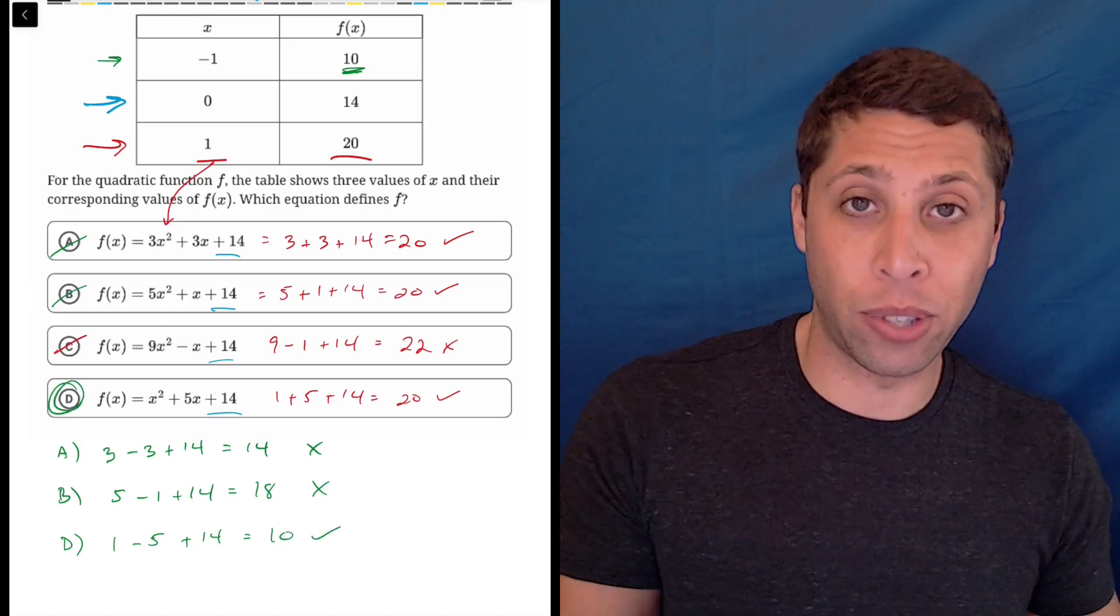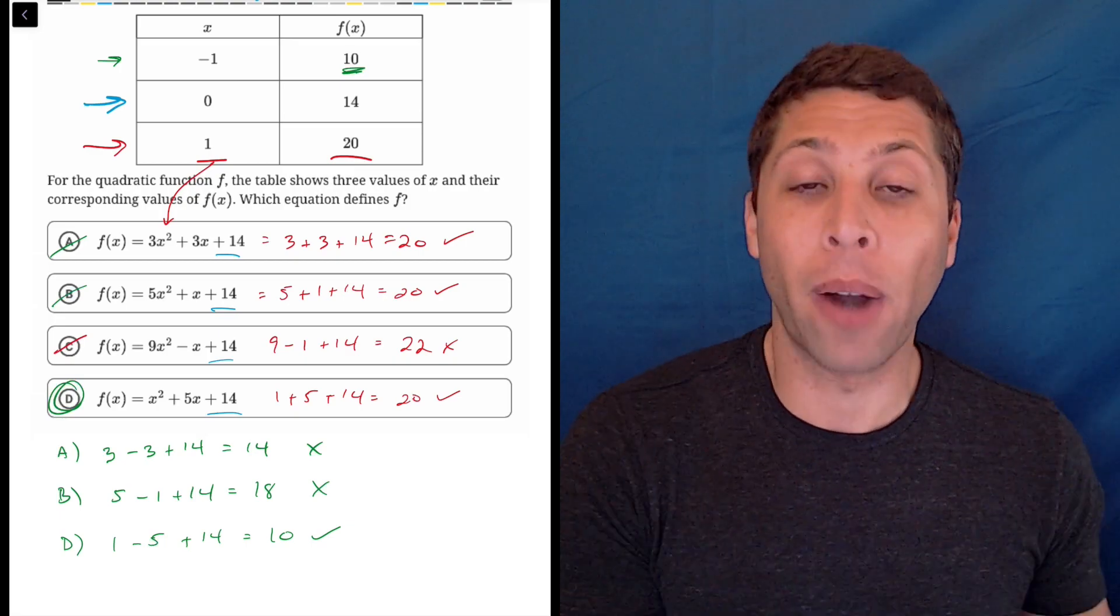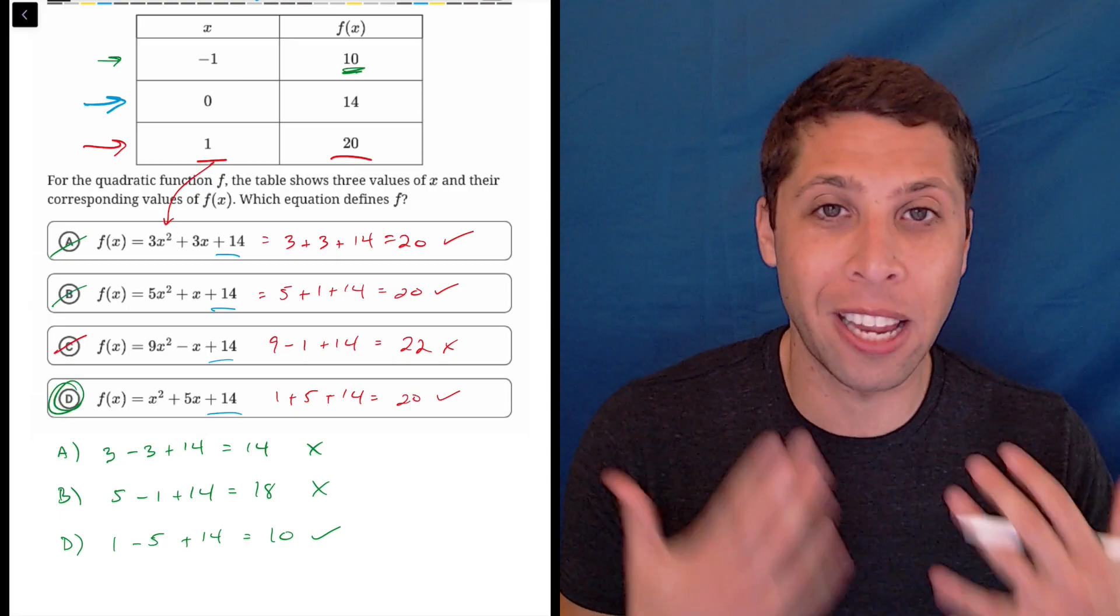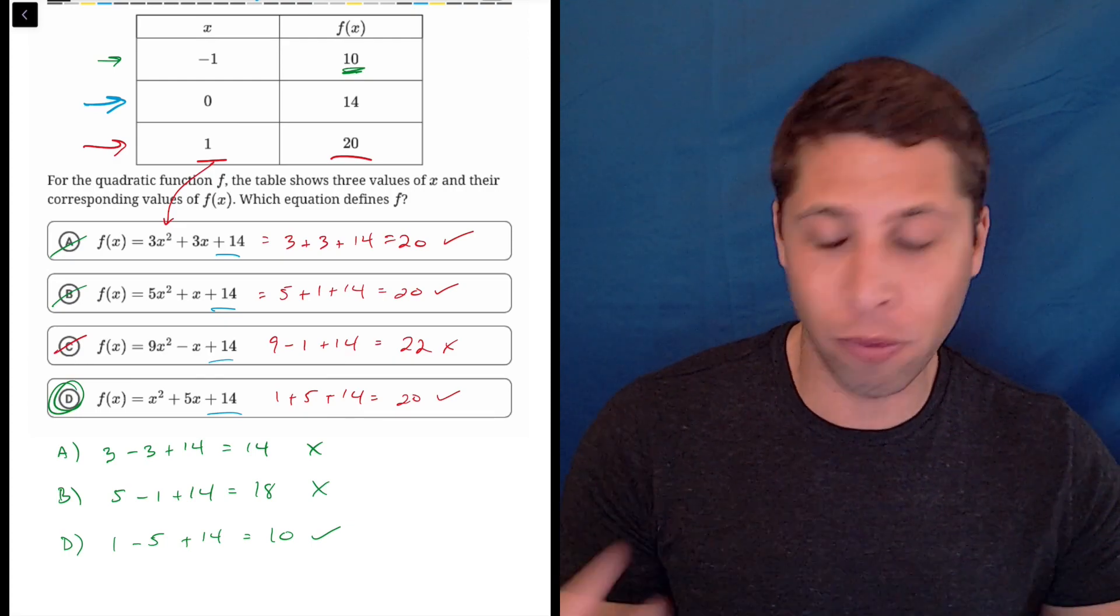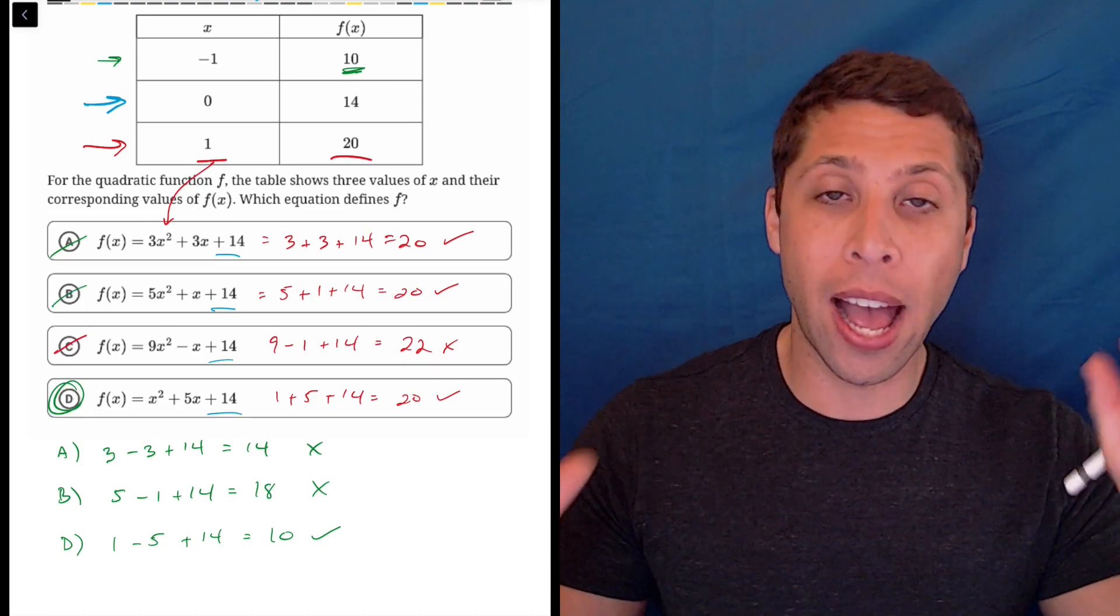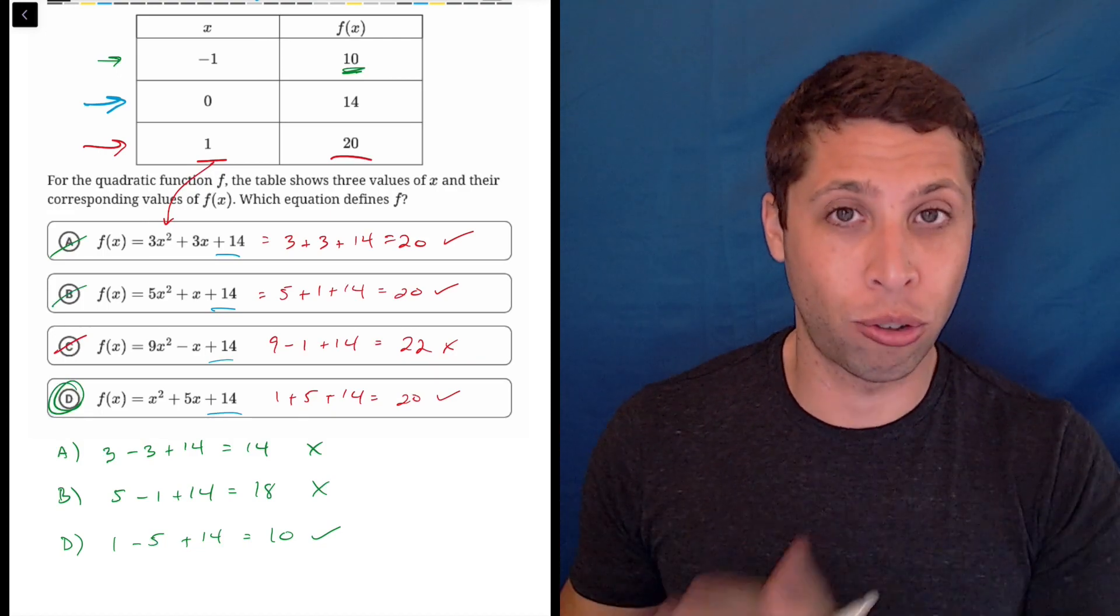And I would have gone all the way through. Even though I was kind of at a point where D had to be right, it's possible I made an arithmetic error somewhere. So it doesn't take much longer to just try that last answer and just be sure you've got it.